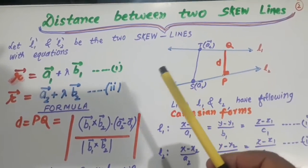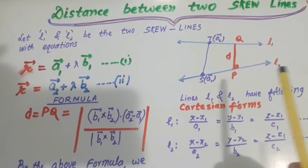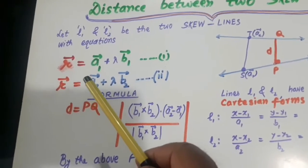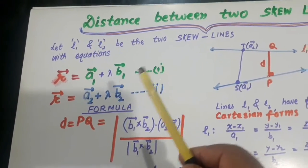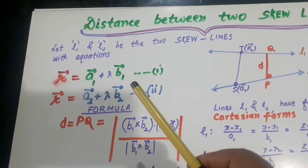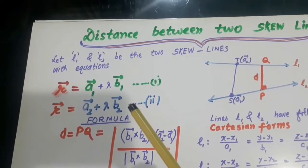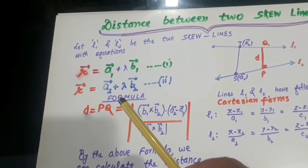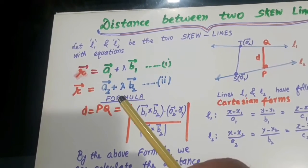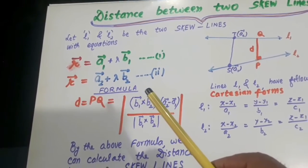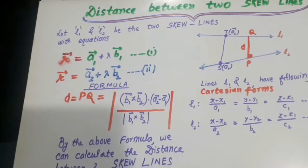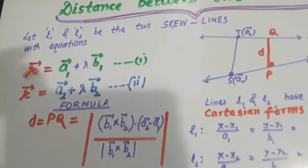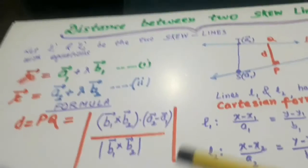With equations, R is equal to A1 plus lambda B1. What is A1, what is B1, what is A2, what is B2 will be given to you in the equations of lines given to you.